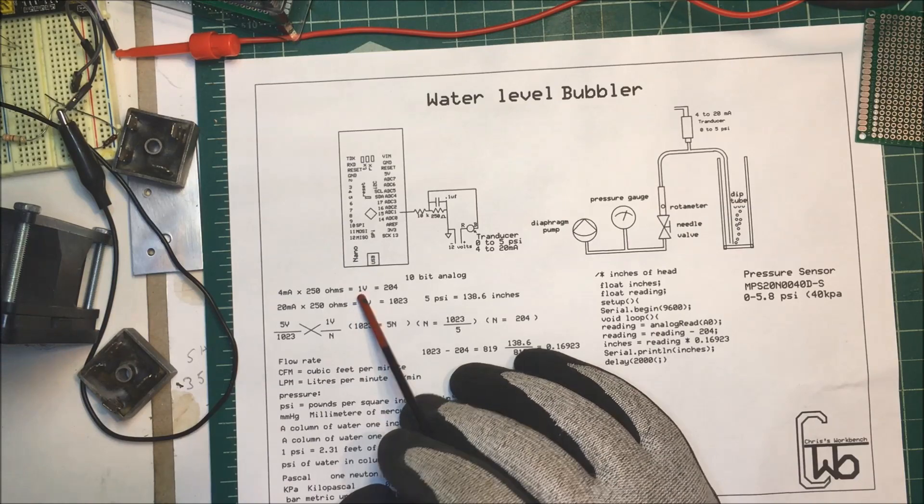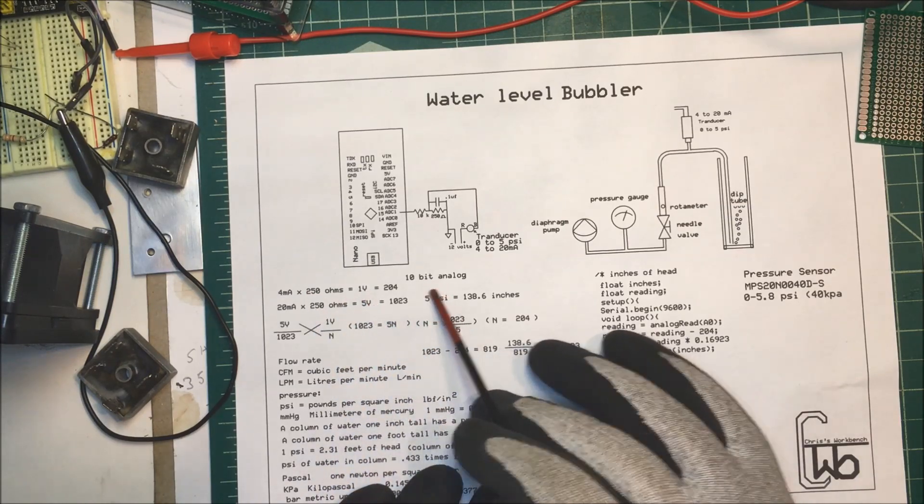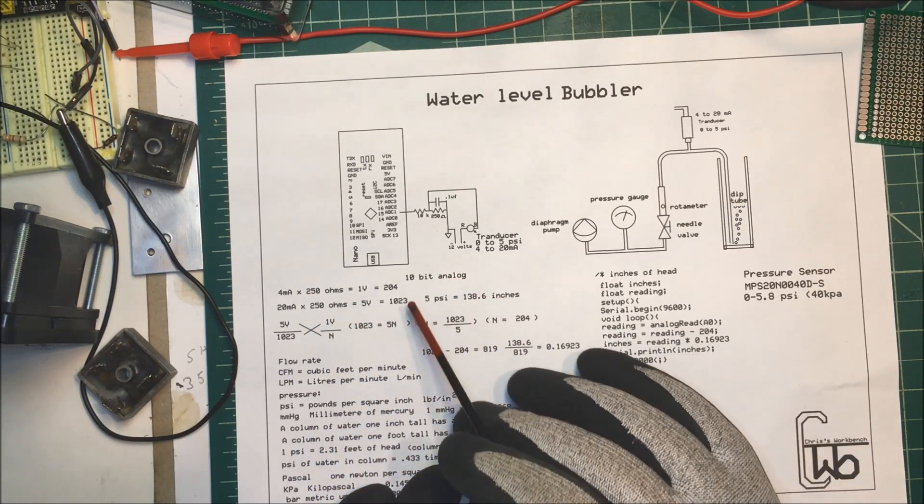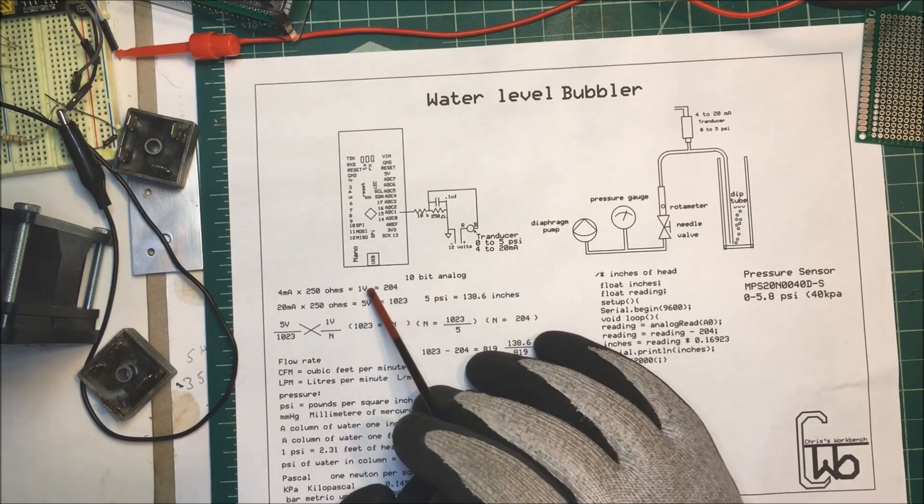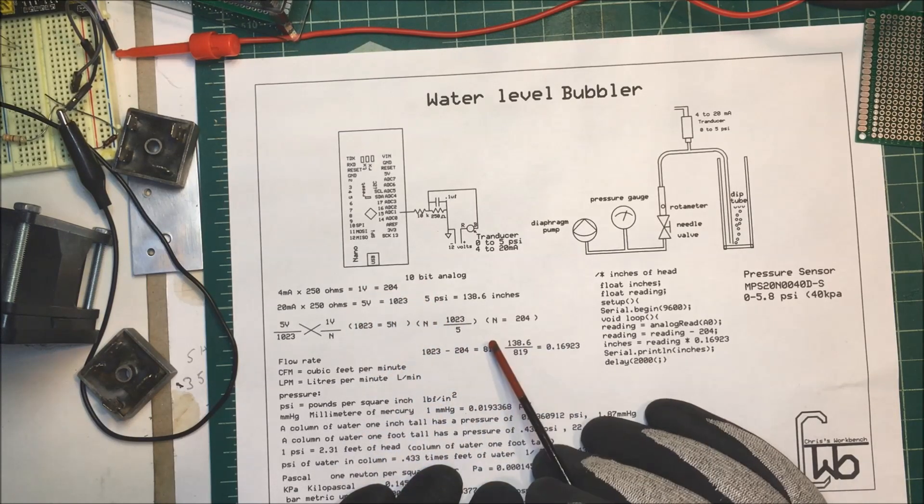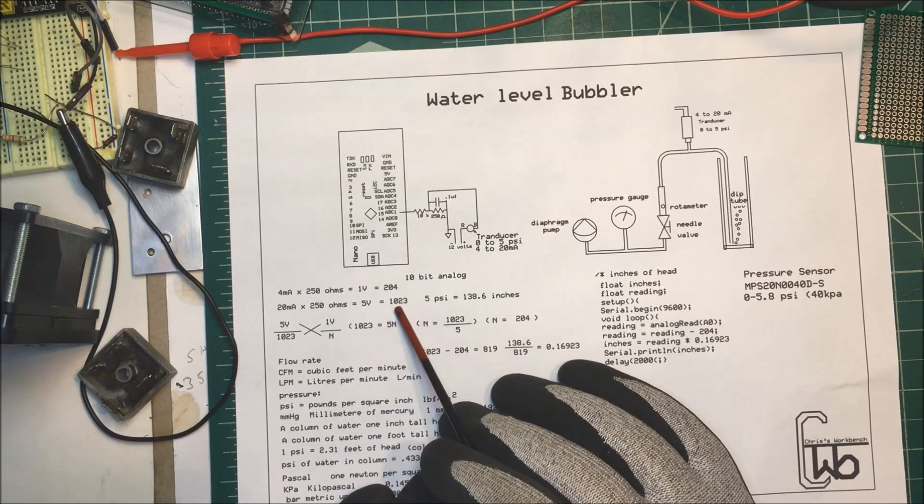Now, at four milliamps, I have a 10-bit analog here. So it's from zero to 1023. And at one volt, it's going to read 204. And at five volts, it's going to read 1023.